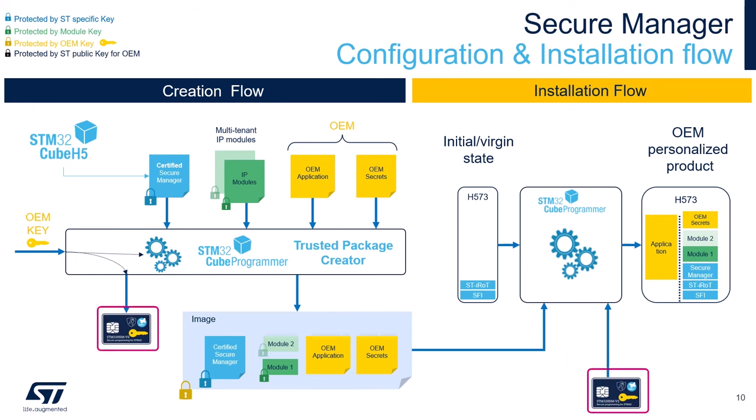Optionally, the OEM could use the STM32HSM hardware security module to protect its encryption key, generate installation licenses, and control the number of devices programmed with its firmware. This is extremely useful when the external manufacturer or programming facility is not trusted. This is the same SFI Secure Firmware Install mechanism you might already be familiar with from other STM32 families.